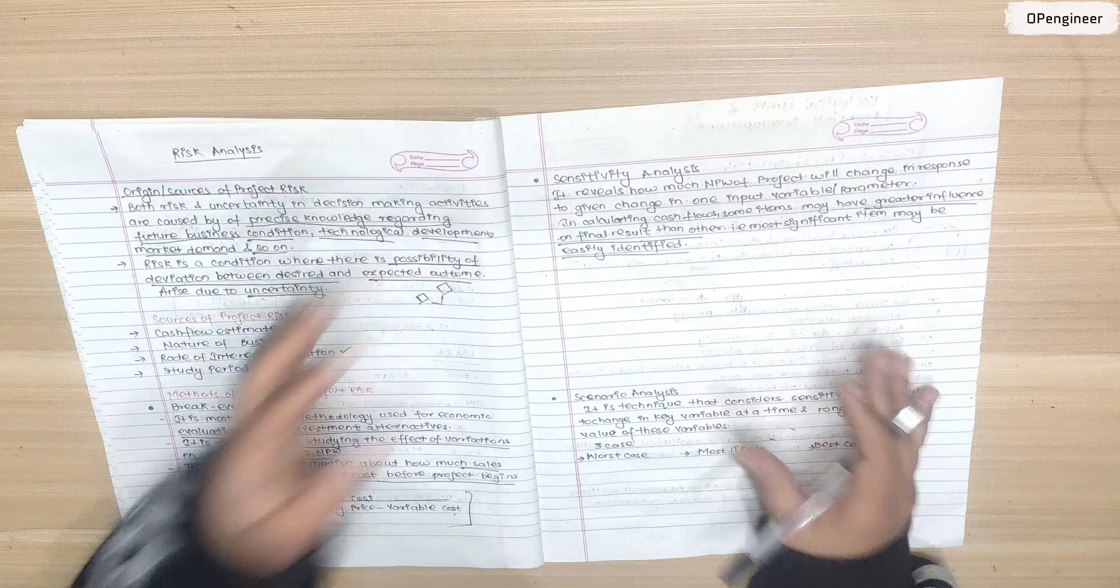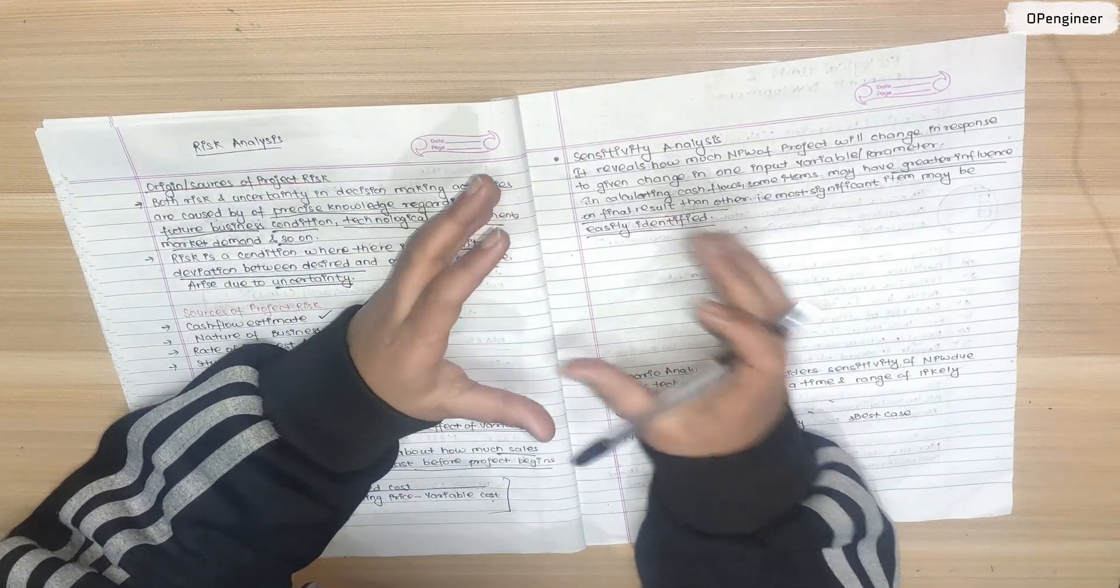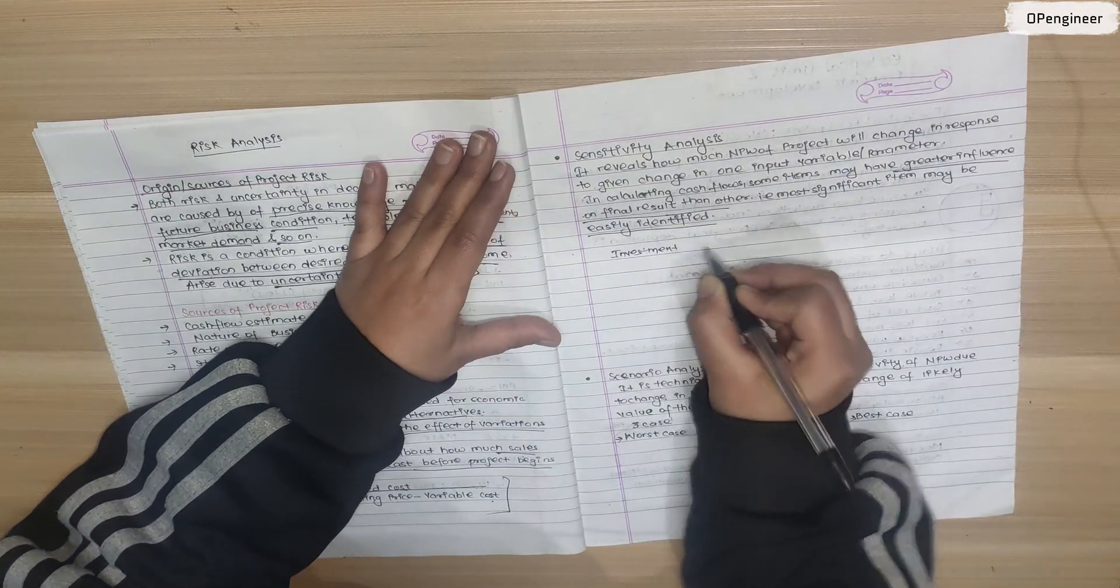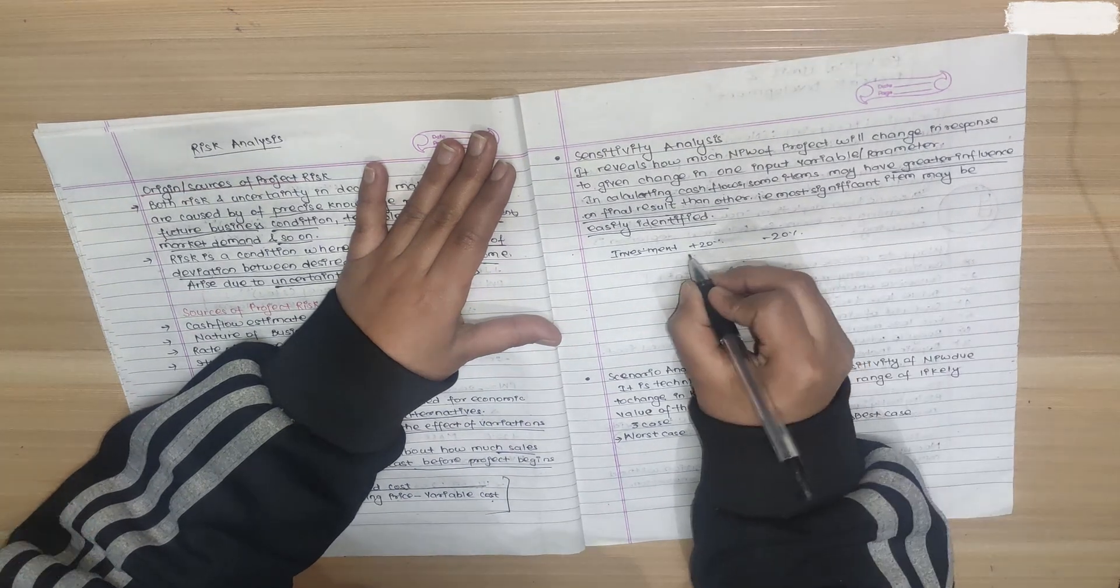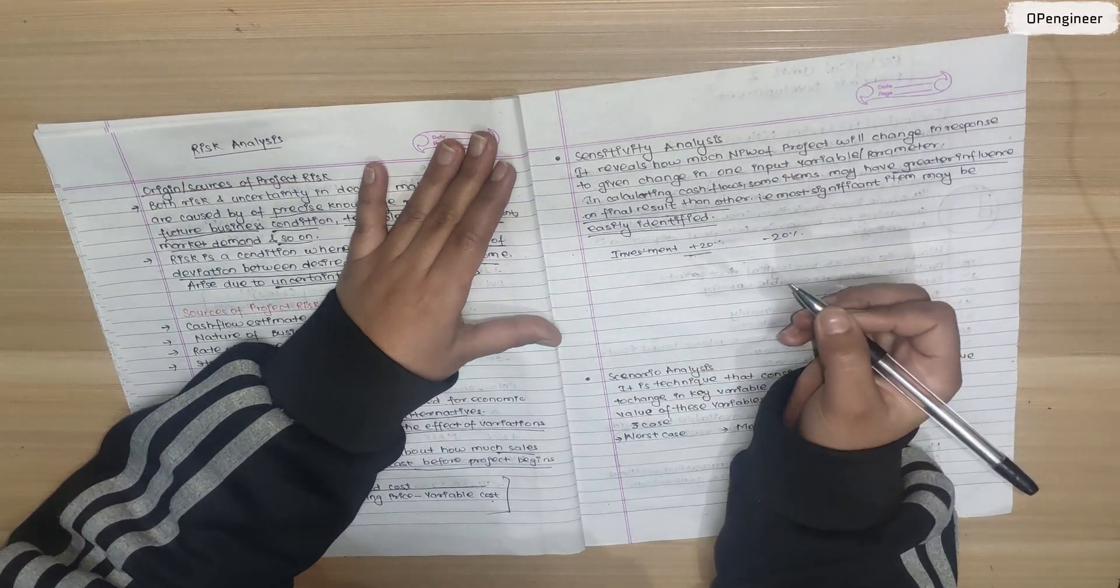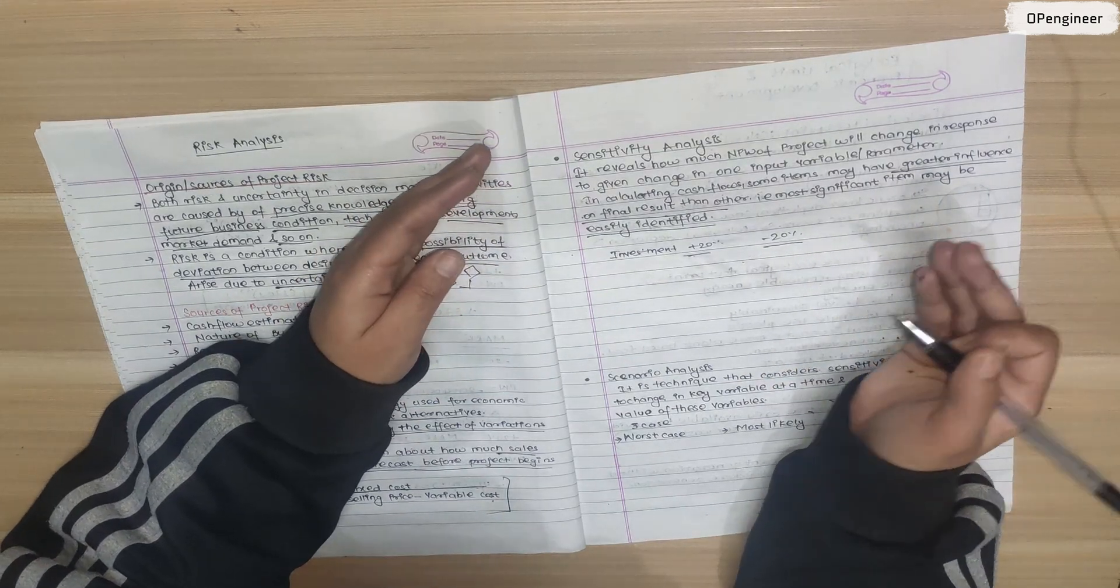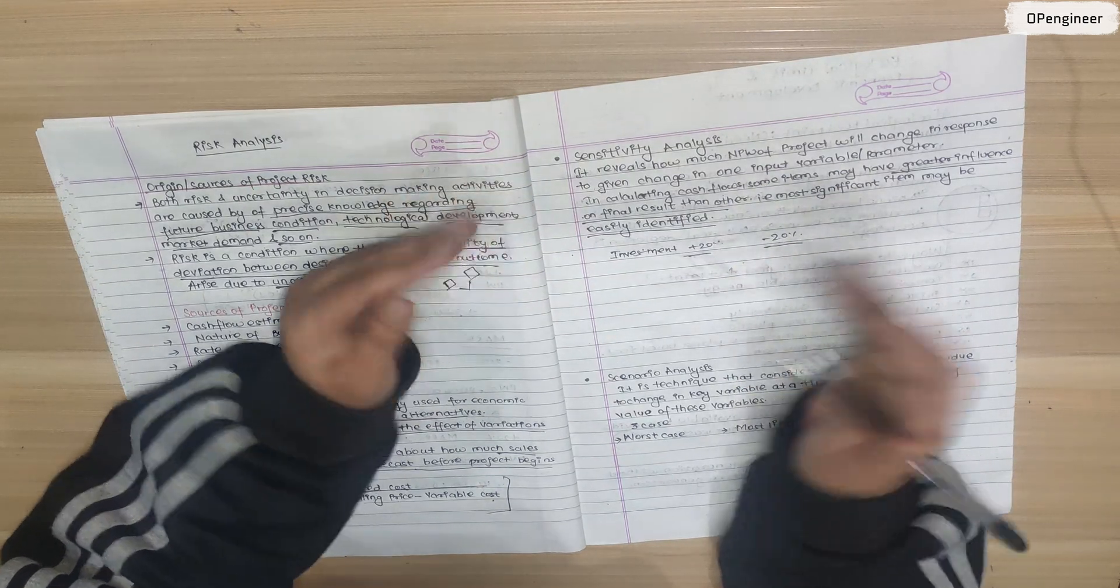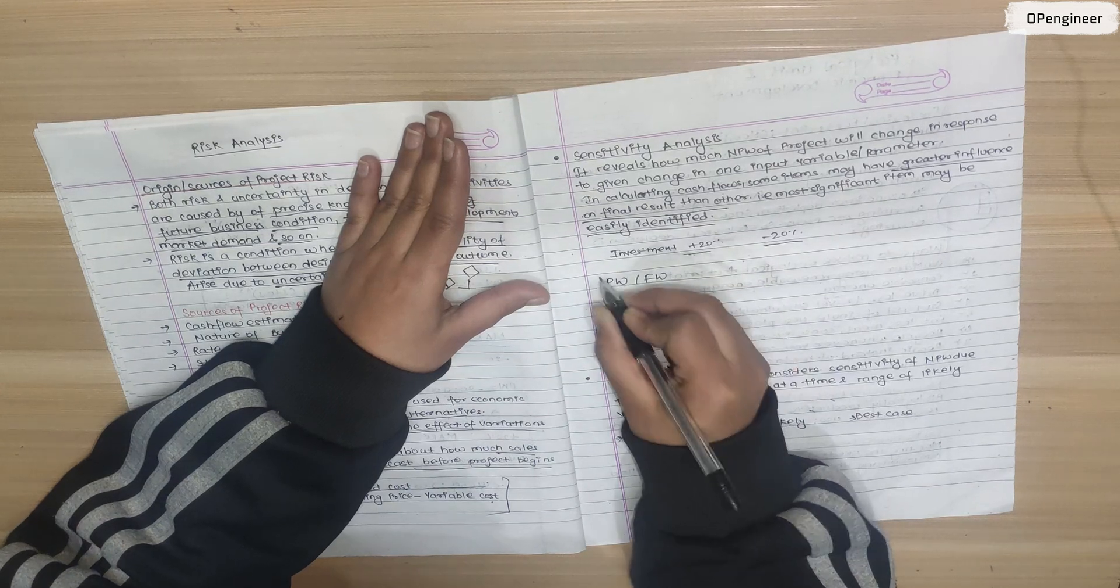Sensitivity analysis: In calculating cash flow, some items may have greater influence on the final result than others. That is, the most significant item may be easily identified. In sensitivity analysis calculation, we see what type of sensitivity is given in the question - like investment at plus 20% and minus 20%. We calculate what happens with plus 20% and minus 20%. We can calculate sensitivity using present worth and future worth.